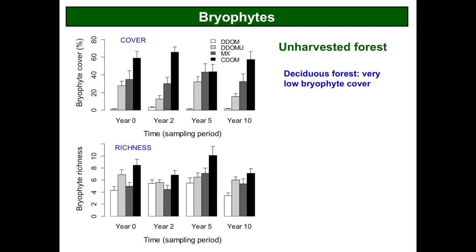Moving on to bryophytes — mosses and liverworts. First, looking at data from the unharvested forest over time: this is why you can't get a self-respecting bryologist to sample bryophytes in a deciduous dominated forest — there's not enough there. There's a fair number of species but the overall cover is really low. So I'm not going to emphasize the bryophyte response in the deciduous dominated forest. I'll focus on the other forest types.